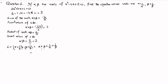We have the value of alpha plus beta, but we do not have the value of 1 over alpha and 1 over beta separately. So we take the LCM of 1 over alpha plus 1 over beta. The LCM of alpha and beta is alpha beta. This gives us beta plus alpha over alpha beta, which can be written as alpha plus beta divided by alpha beta.